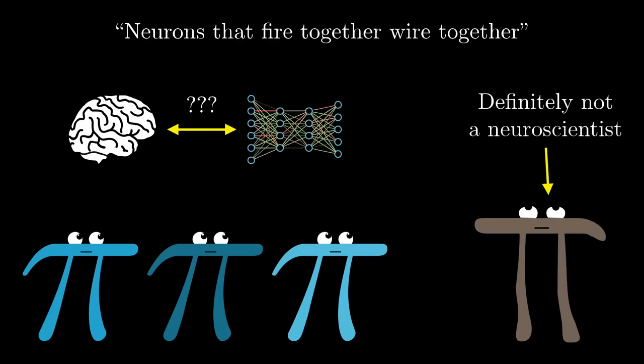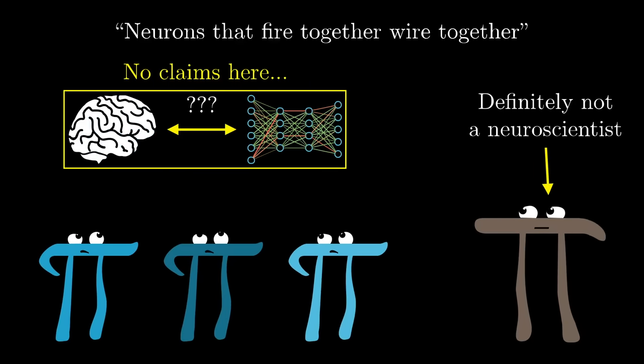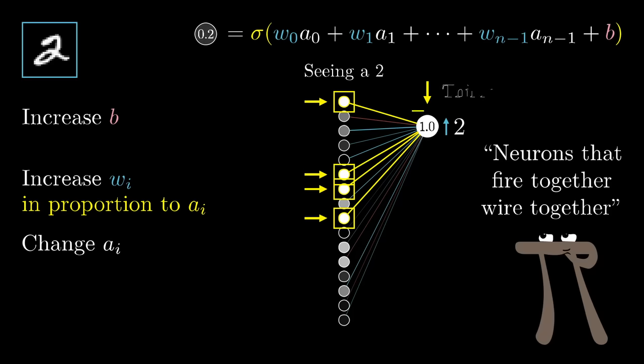To be clear, I really am not in a position to make statements one way or another about whether artificial networks of neurons behave anything like biological brains, and this fires together wire together idea comes with a couple meaningful asterisks. But, taken as a very loose analogy, I do find it interesting to note.